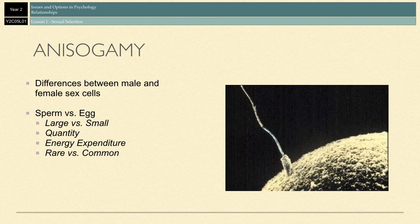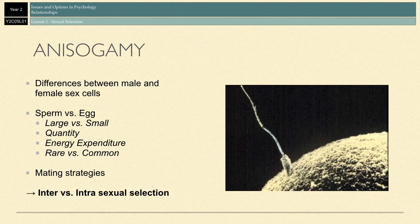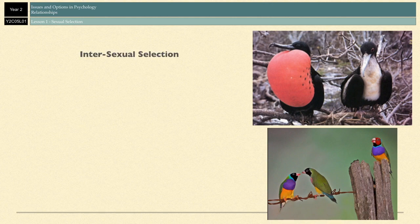All of those differences have given rise to different mating strategies adopted by males and females, and those are called inter- and intrasexual selection. Let's go into those and see what they actually are. First off, we are going to start with intersexual selection, also known as mate choice or female choice, and this type of strategy is preferred by females.